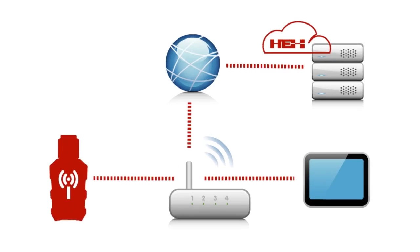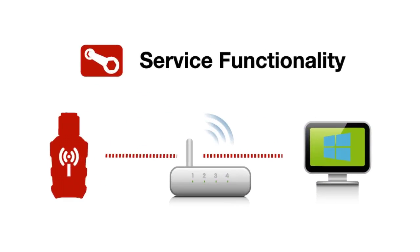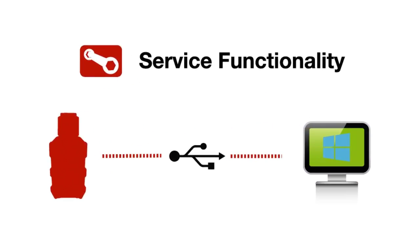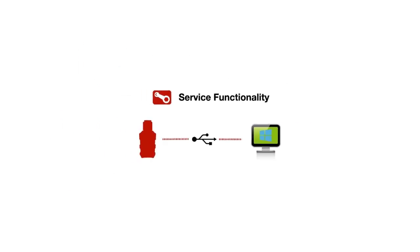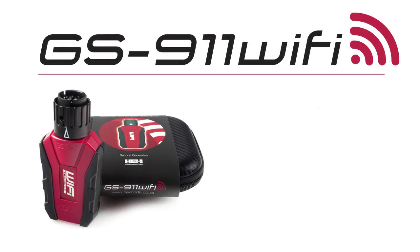For all other service functionality, you require the GS911 Wi-Fi to be in infrastructure mode so it can access the HEX cloud over an internet connection. Alternatively, you can use your GS911 Wi-Fi in combination with the latest Windows PC software to have access to the full range of service functionality. Remember, we did design the GS911 to be used in infrastructure mode, but that certainly does not stop you from using either a USB cable or D2D mode when you want full service functionality via your Windows PC software. Thank you very much for watching this tutorial.